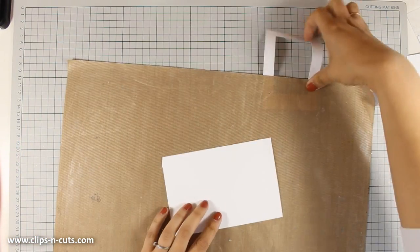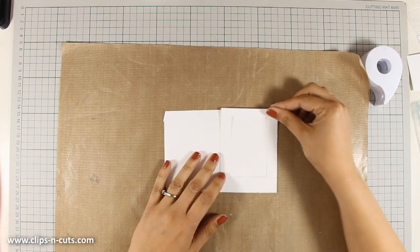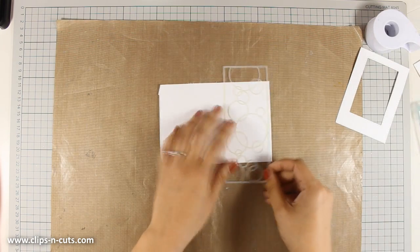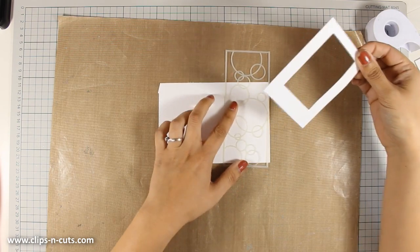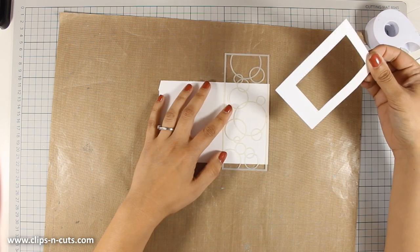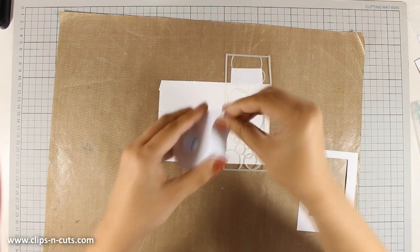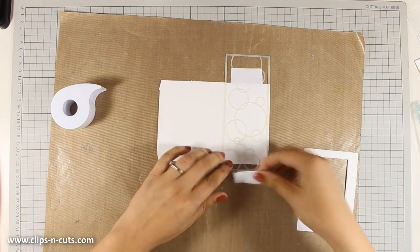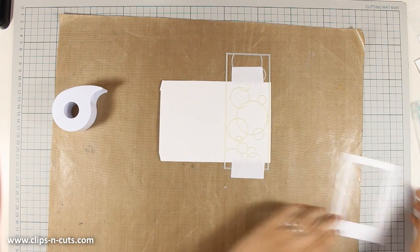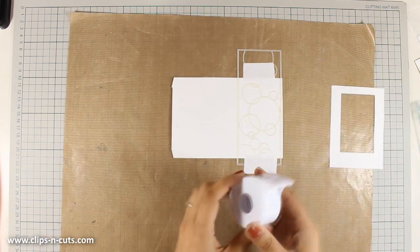So now I am going to use this white cardstock and I am going to use the stencil on top. I am checking with my frame to see if that is going to be okay. So I am going to tape it down with my post-it tape and I will be inking it with Distress Inks.